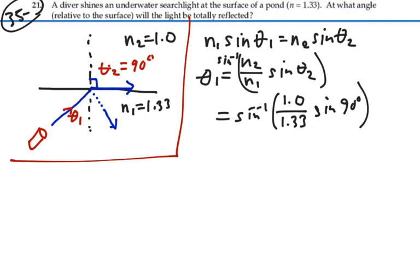Sine of 90 degrees is 1, so we have the inverse sine of 1 over 1.33, which equals 48.75 degrees. So that is the angle of incidence from the normal, theta 1.